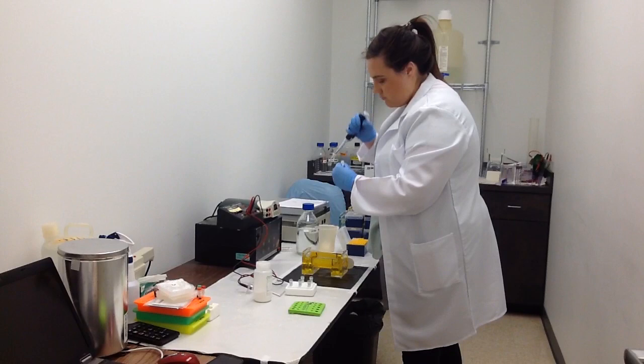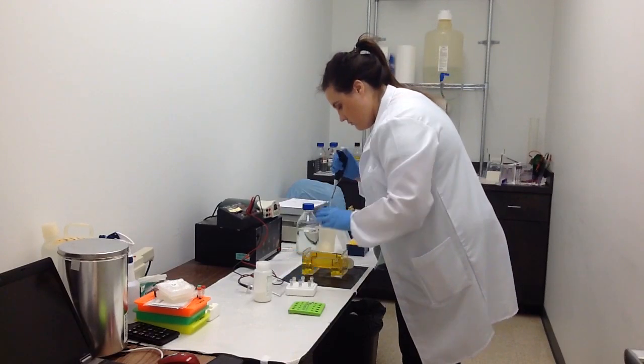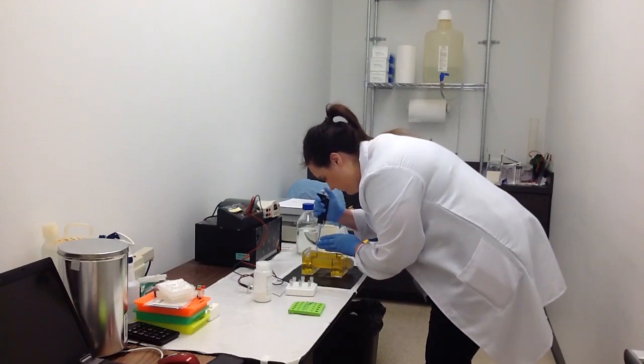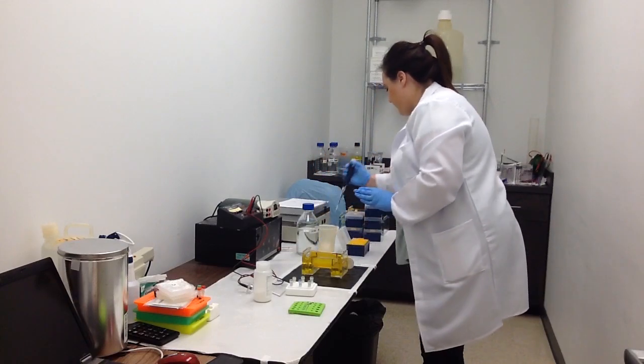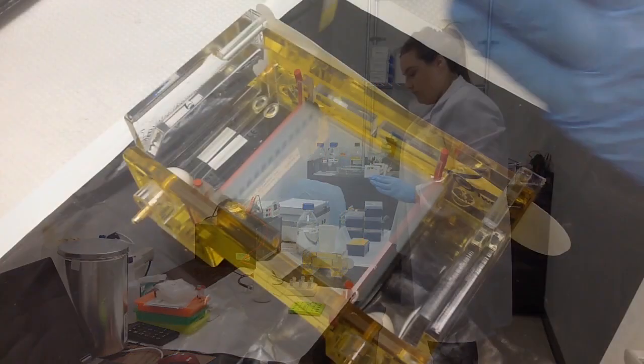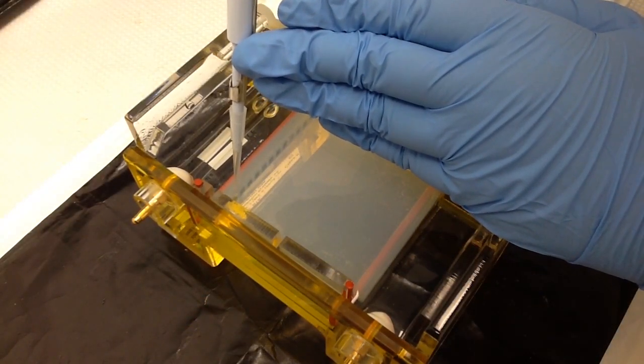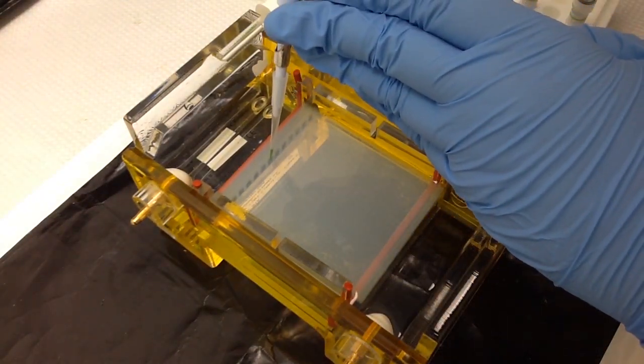First I'll be loading our 50 base pair ladder into the first well. I am right handed so I usually use that hand to depress the plunger of the pipette, while my left hand is used to stabilize the process. My left elbow or wrist is touching the bench or the gel rig to anchor me and keep my hands stable. Using my left hand as a stabilization tool will help me not to pierce through the gel with the pipette tip.